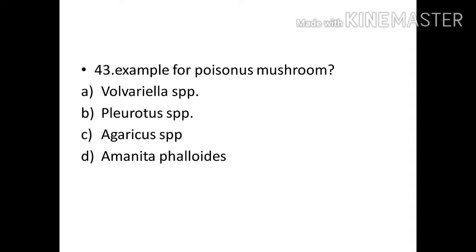Example for poisonous mushroom? Options: Volvariella species, Pleurotus species, Agaricus species, Amanita phalloides. Correct answer: Option D, Amanita phalloides.